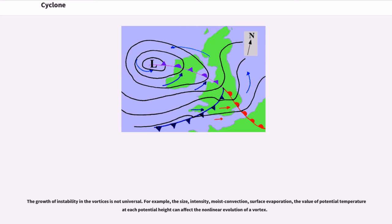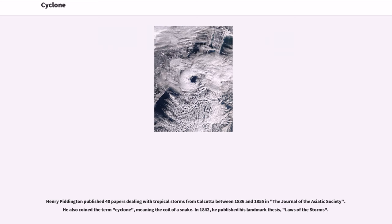The growth of instability in the vortices is not universal. For example, the size, intensity, moist convection, surface evaporation, and the value of potential temperature at each potential height can affect the non-linear evolution of a vortex. Henry Piddington published 40 papers dealing with tropical storms from Calcutta between 1836 and 1855 in the Journal of the Asiatic Society. He also coined the term cyclone, meaning the coil of a snake. In 1842, he published his landmark thesis, Laws of the Storms.